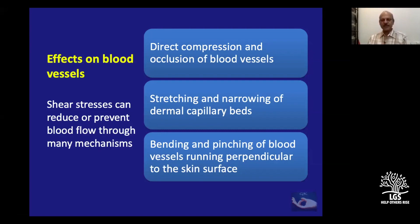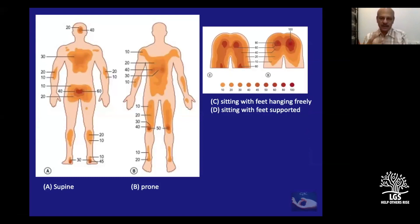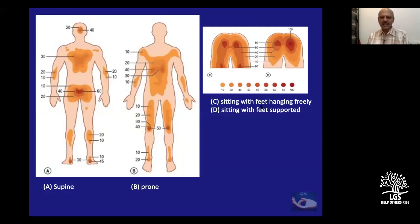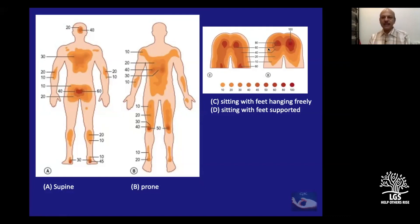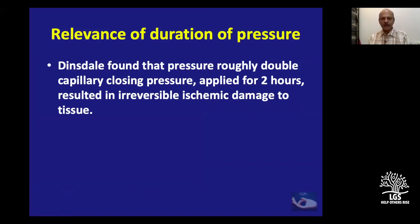When all this happens, there is a reduction in blood supply leading to ischemia. Pressure recordings in different positions: supine — sacral, posterior calf, and heel regions are most affected; prone — chest, abdominal region, front of knees, and lower anterior leg. When sitting with feet hanging freely, pressure is more equally distributed; when sitting with feet supported on a stand, pressure is concentrated in the ischial region.